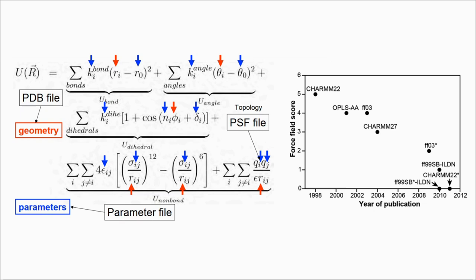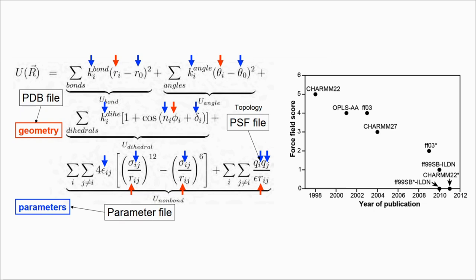Looking at the slightly older version, the CHARMM forcefield equation, we can see where the different values from calculating the energies come from. We can see that variables with red arrows come from PDB geometry, aka coordinate files, and the variables with blue arrows are taken from the parameter file.